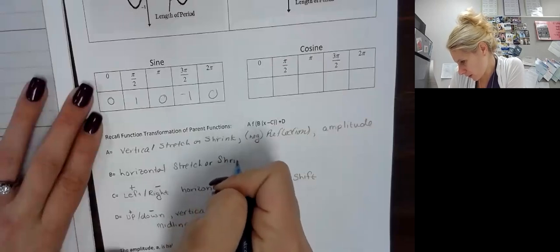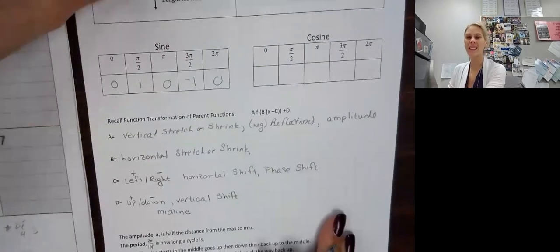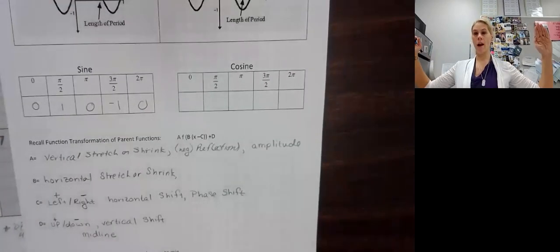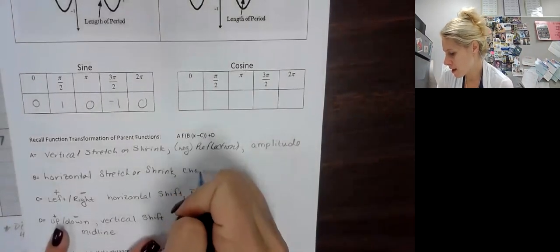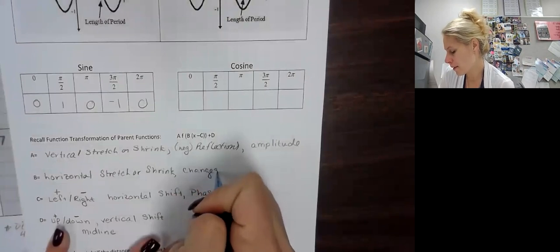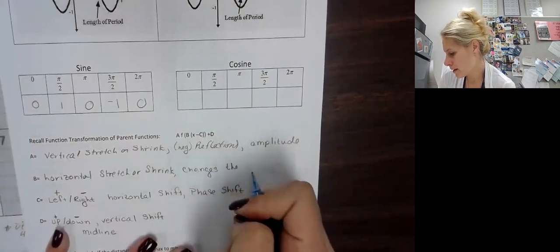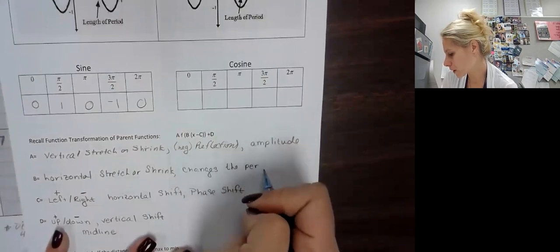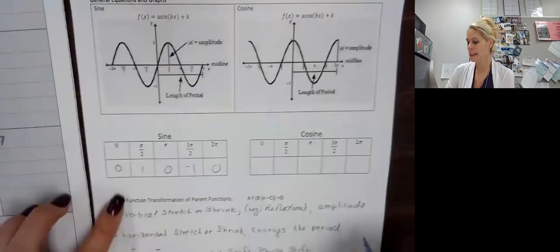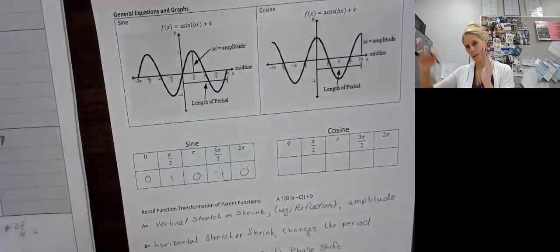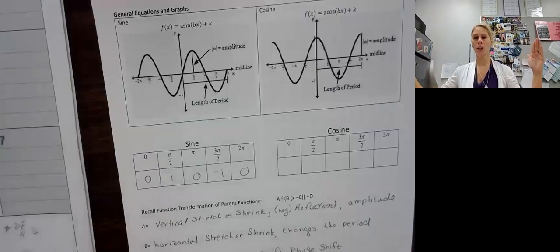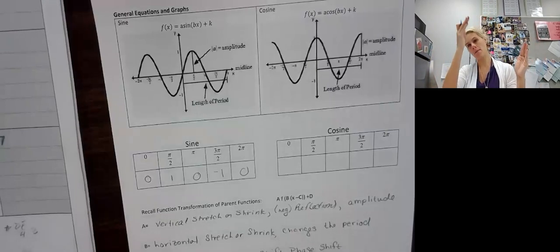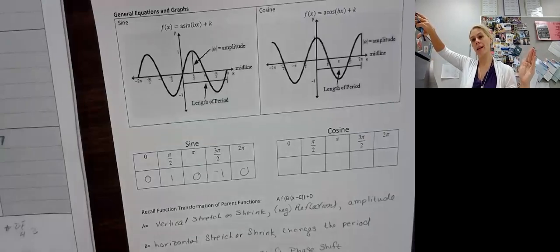Remember, in our parent function, our full period is 0 to 2 pi, and then it starts repeating. Well, we can shrink that and make more rotations within that 2 pi, or we can stretch it where it takes more than 2 pi to make a full rotation.